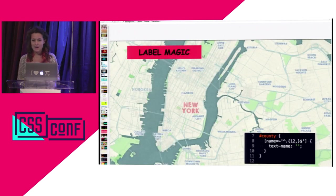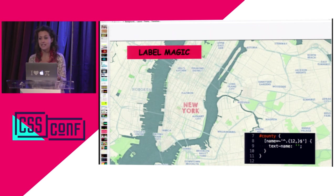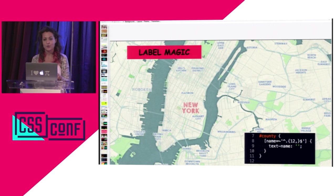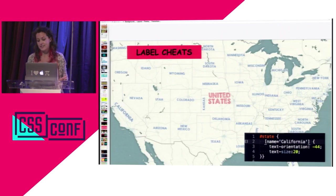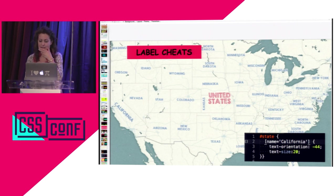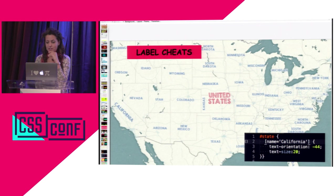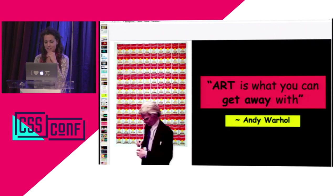Labels are also a problem in maps because people zoom in and out, and text labels for cities can be very long — it's very common in Germany with agglutinated words. Sometimes you have to cut them down, or do tricks where you say if it's longer than 12 characters, just cut it off and don't render it. If you want to render all labels but twist certain ones beyond a character length, you can do that with CartoCSS — California and Mississippi, for example, can be twisted this way. Art is what you can get away with — Andy Warhol said that.